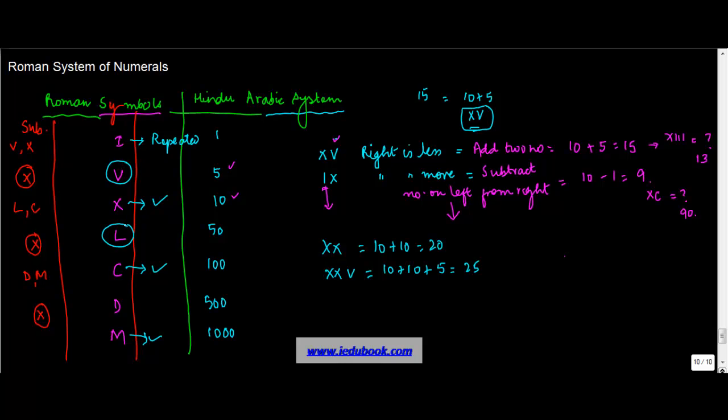V, L, and D cannot be repeated. So you cannot have a number as VV or you cannot have a number as LL or DD. A strict no-no.